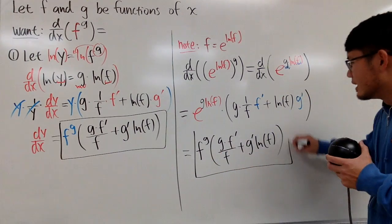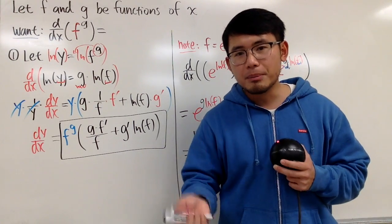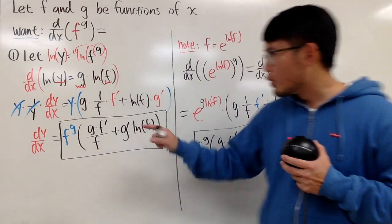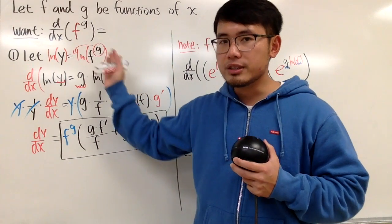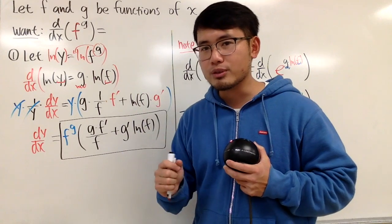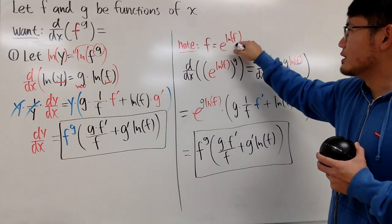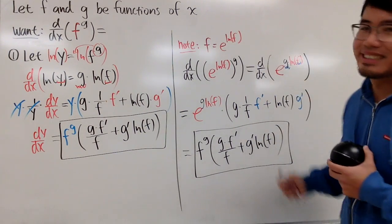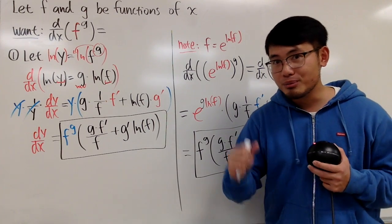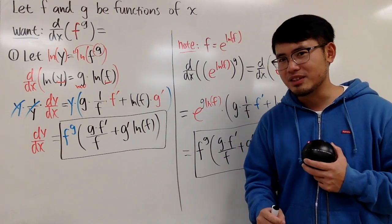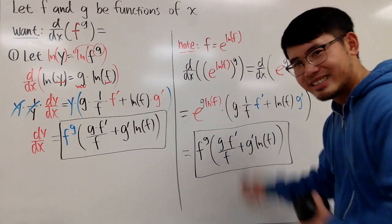So that's pretty much it. Leave a comment below and let me know which approach you like better — whether you prefer setting y equal to f to the g's power and taking the natural log on both sides, or rewriting the base as e to the something and working from there. If you're new to my channel, be sure to subscribe, and if you liked this video, be sure to give it a like. Thank you guys so much, and as always, that's it.